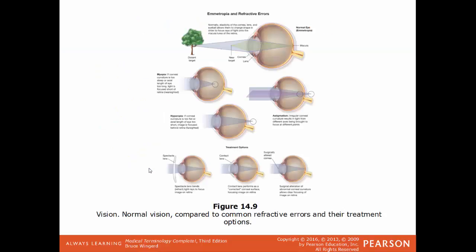Here are some examples of those refractive errors. With ametropia (normal vision), light is directed through the pupil, through the lens, and right onto the macula of the retina. Someone who is nearsighted or has myopia has the image focused ahead of the retina — that's why they see things up close fine but things farther away become blurry. Someone who is farsighted or has hyperopia has the image focused behind the retina, so they're able to see things far away clearly but things up close are blurry. And for astigmatism, the cornea has an irregular curvature so the light isn't directed the right way, leading to blurred vision with the image focused on several points rather than just one.